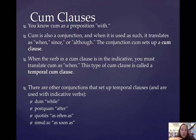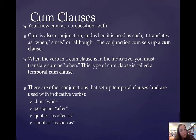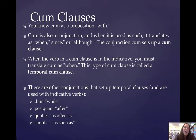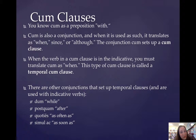The conjunction cum sets up a cum clause. The first type of cum clause is called a temporal cum clause — that is when you have cum as a conjunction setting up a subordinate clause, and it tells you just when something happened, so it translates 'when.' There are other conjunctions that can set up a temporal cum clause: dum, meaning 'while'; postquam, meaning 'after'; quoties, meaning 'as often as'; or simulac, meaning 'as soon as.' We'll look at some examples of these in an upcoming slide.